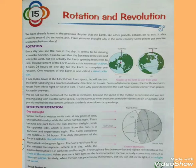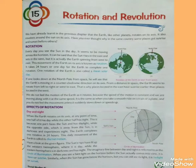Rotation. Every day you see the Sun in the sky. It seems to be moving across the horizon — the Sun rises in the east and sets in the west. But it is actually the Earth spinning from west to east. So we see the Sun rise on one side and set on the other.